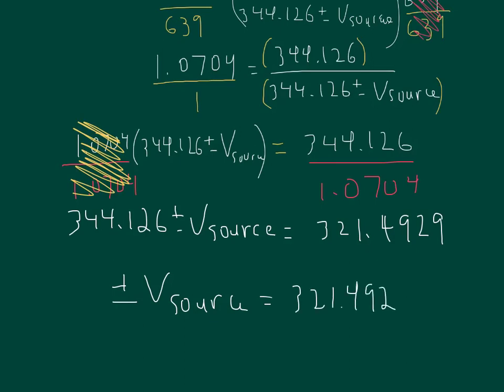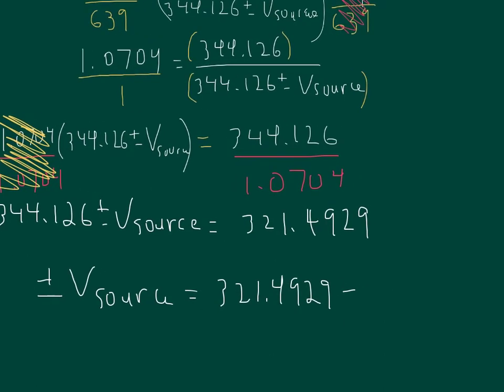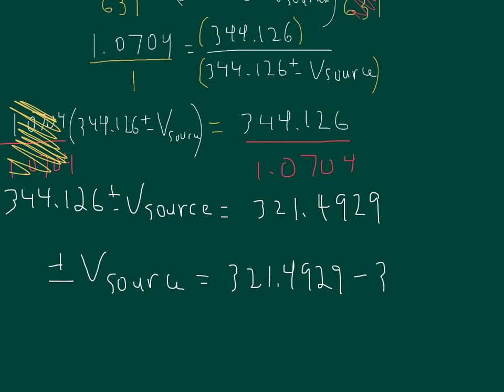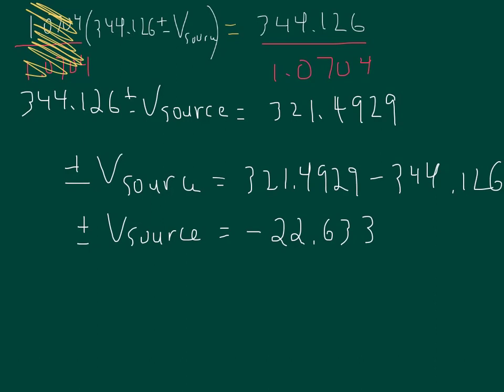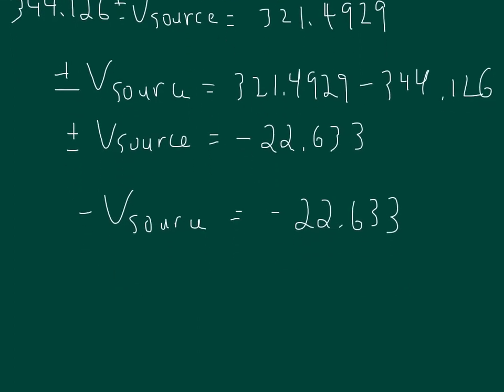I've got 321.4929 minus 344.126, giving us minus 22.633. Now this is a speed, it's not a vector velocity, so when we're looking here obviously we would be using the minus, so it would be minus V source equals minus 22.633. Or because there's a negative on both sides, the speed of the source would simply be 22.633 meters per second.